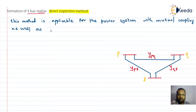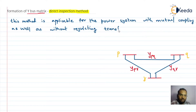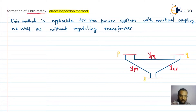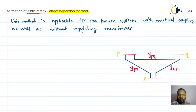The method is also applicable only in the absence of a regulating or phase-shifting transformer. If there is mutual coupling or a regulating transformer present in the power system, this method will not hold good. So it is applicable only when there is no mutual coupling and no regulating transformer.